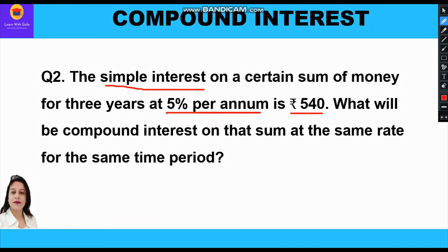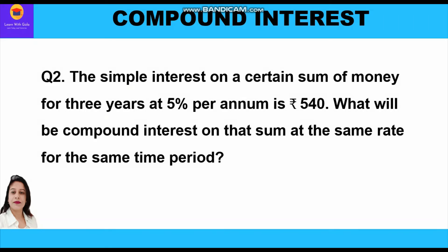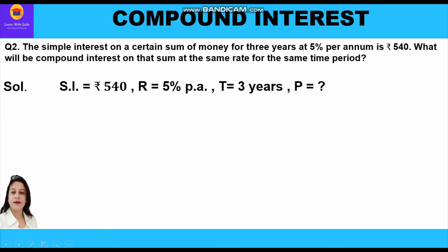Here, simple interest = rupees 540, rate of interest = 5% per annum, and time period = 3 years. We will find compound interest on the same sum at the same rate and time period — that is, 5% per annum for three years.